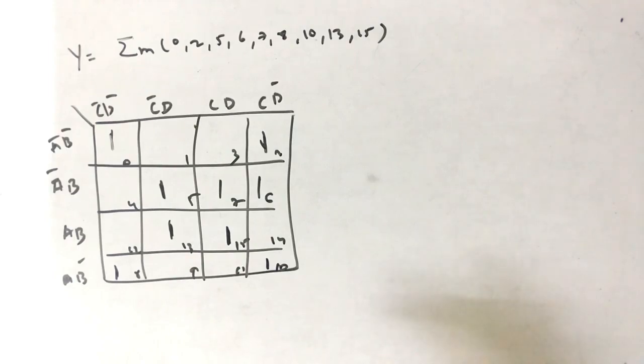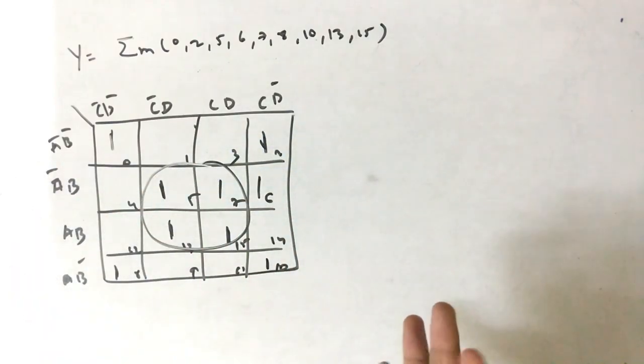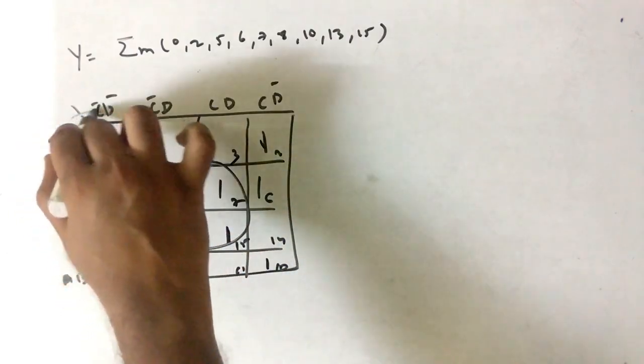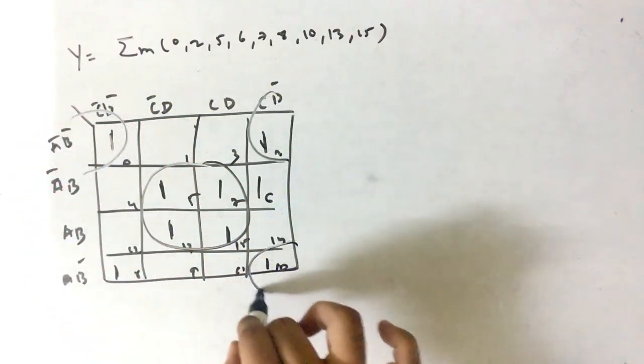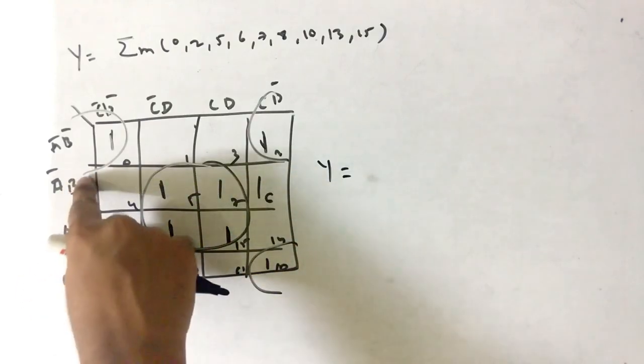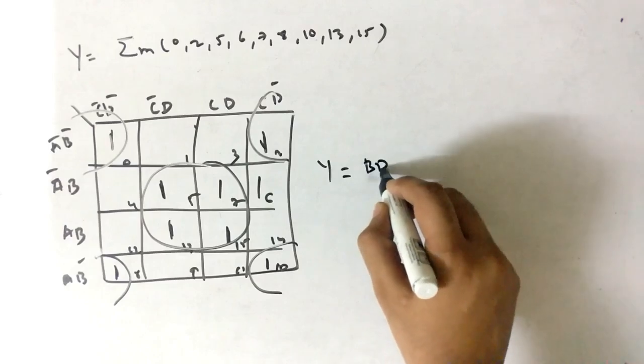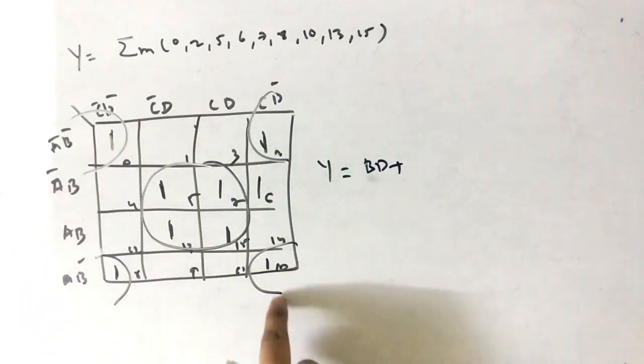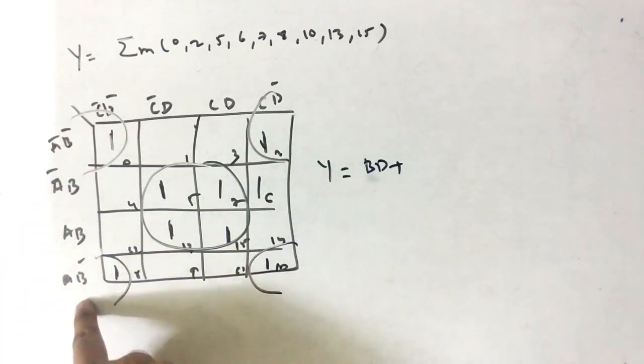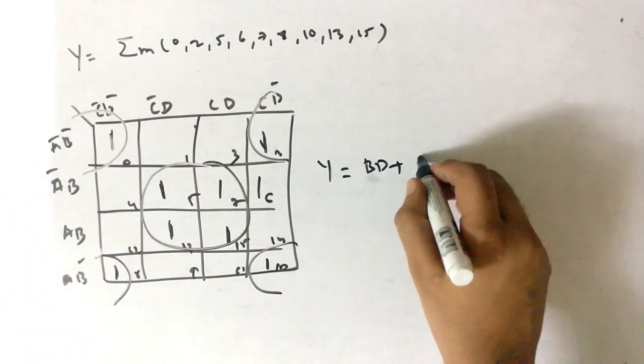Now what you have to do is club the common parts. You have to club this in groups of 4. These 4 are common, you can club that. Then these outer 4 you can club. So what is the equation? For this, b is common and here we have d as common, so b d. Here you can see that b bar is common and here d bar is common, so b bar d bar.